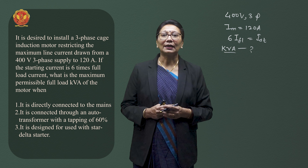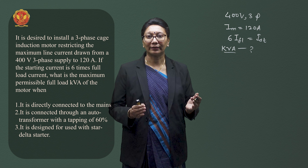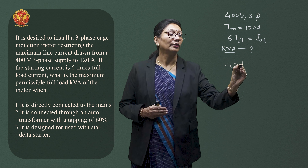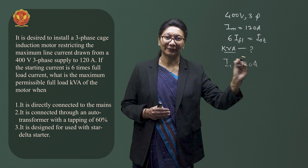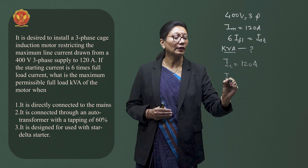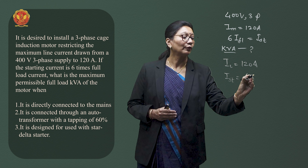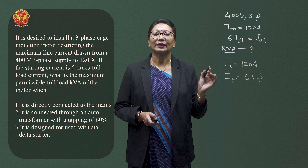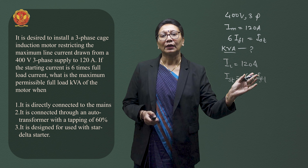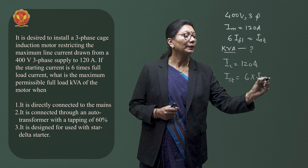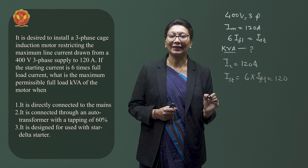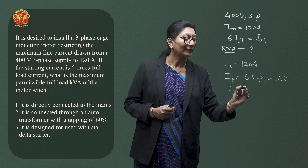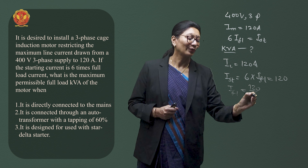For direct online starting, the maximum current should be 120A and starting current equals 6 times full load current. So 6 times full load current must not exceed 120A, giving us a full load current of 120 divided by 6, which is 20A.